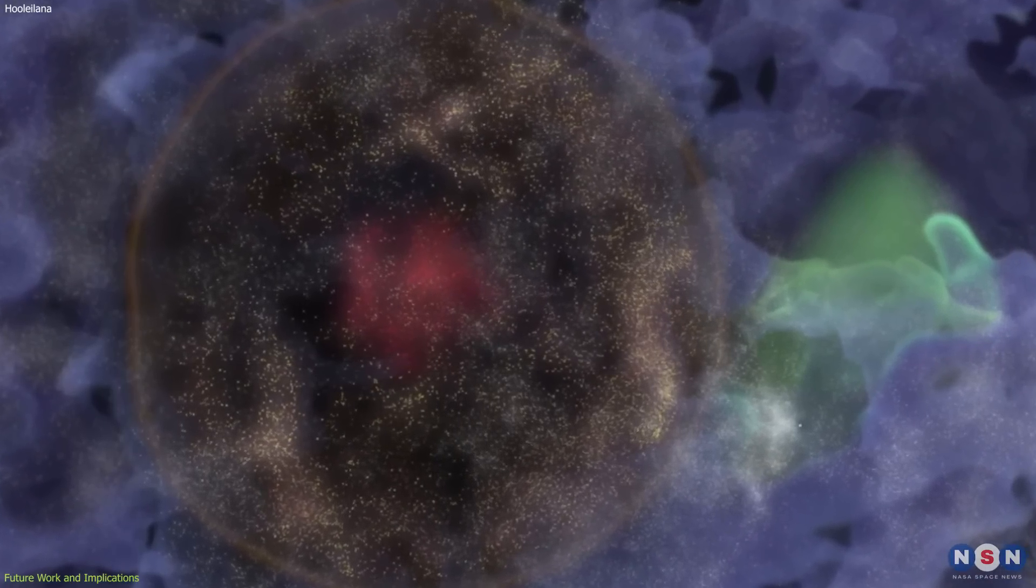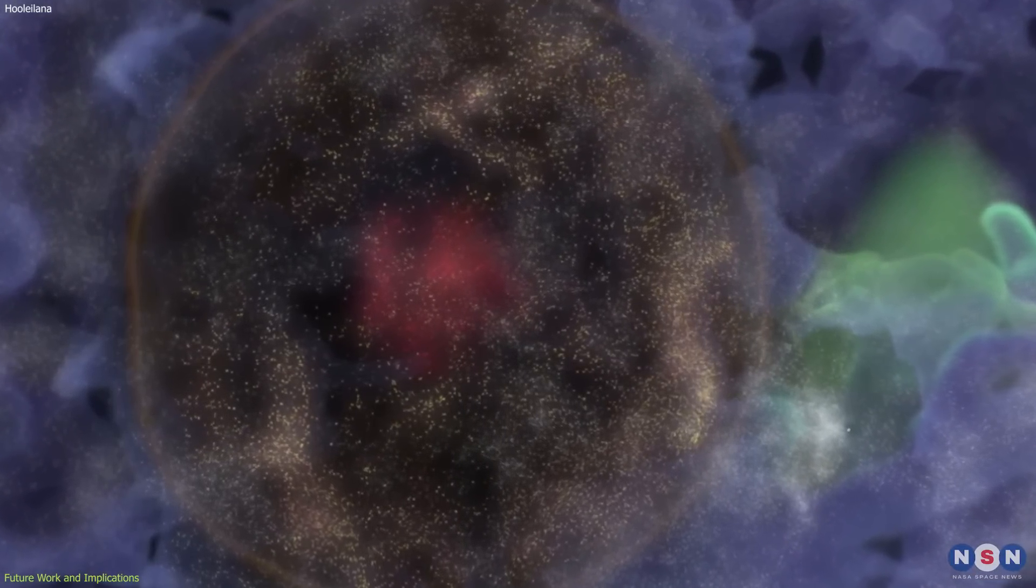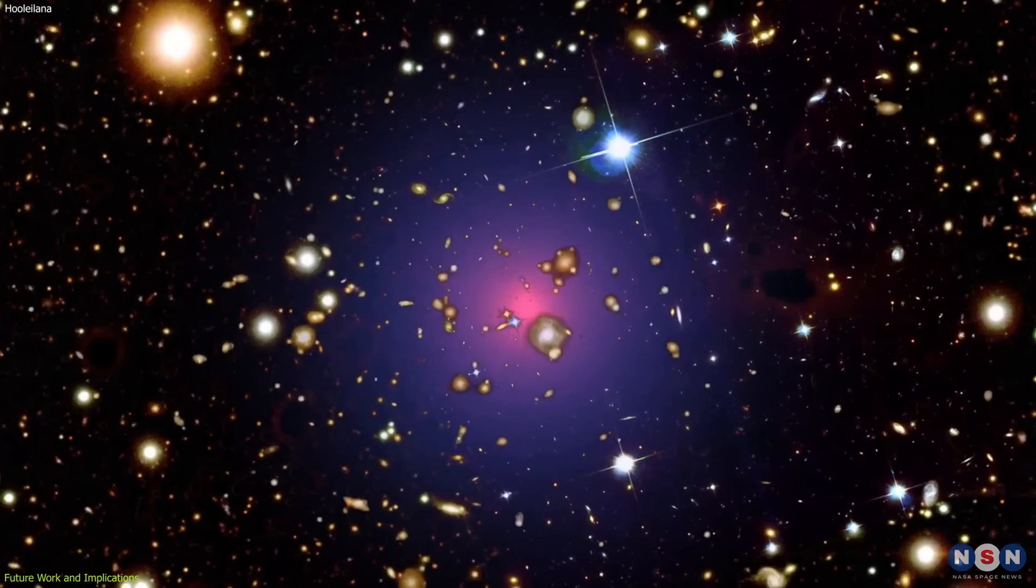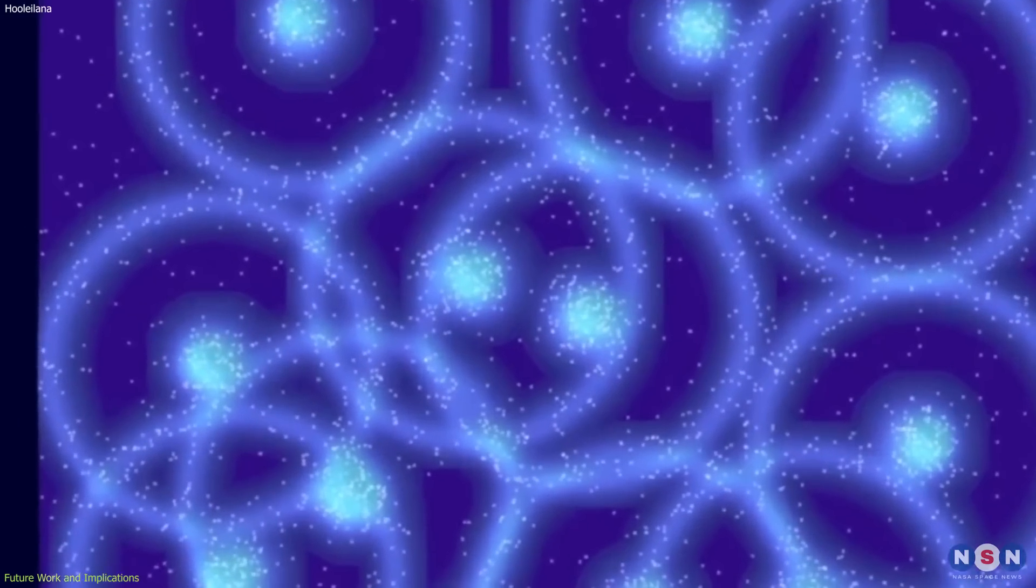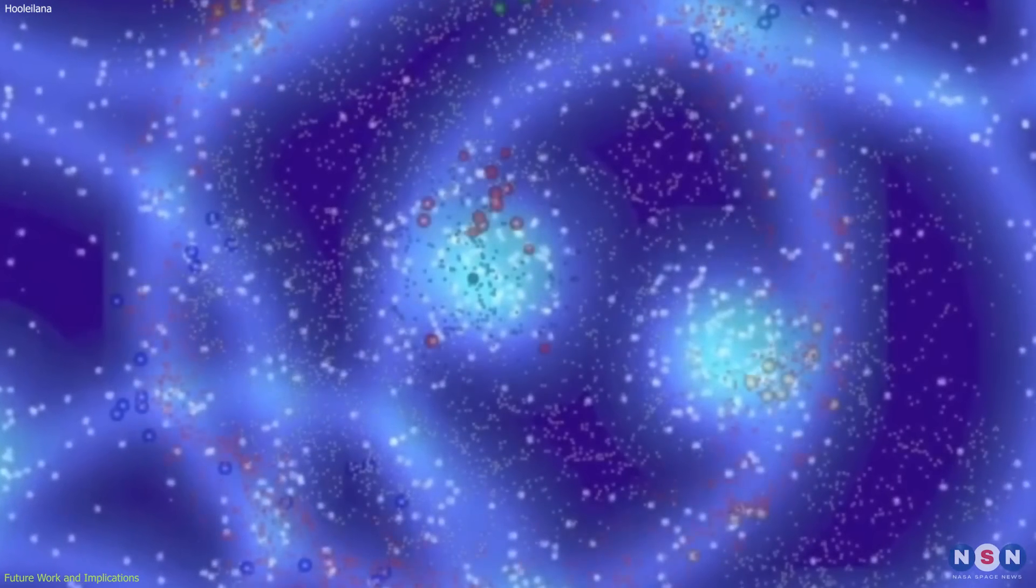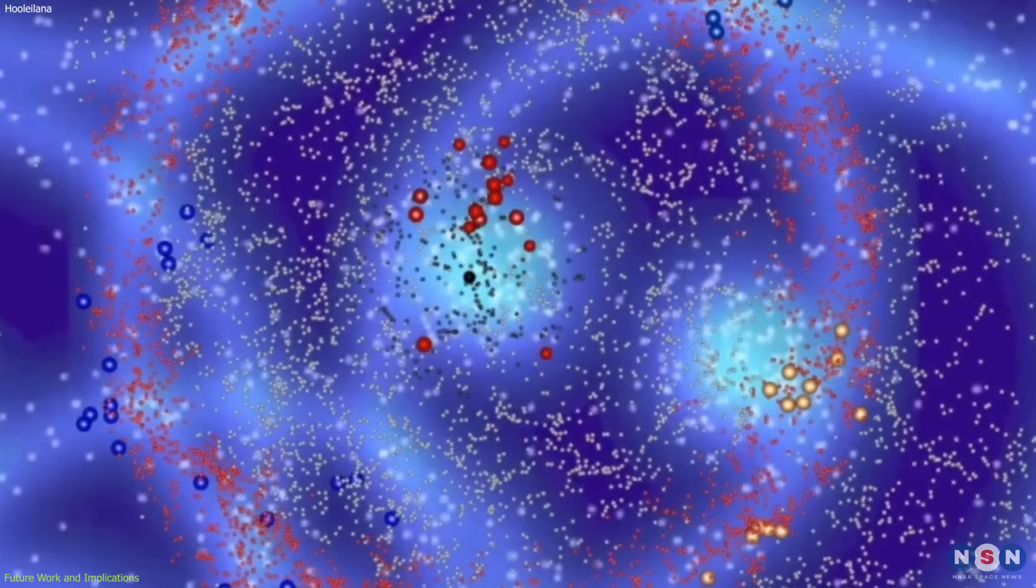For example, the astronomers assumed that Hulelana is spherical and isotropic, but this might not be true in reality. They also used a specific model of BAO to interpret their results, but this model might not be accurate or complete.